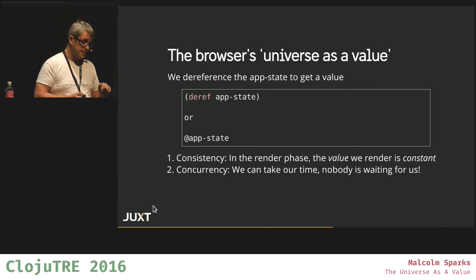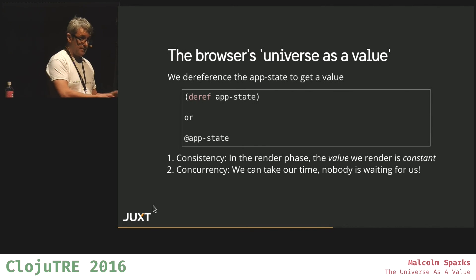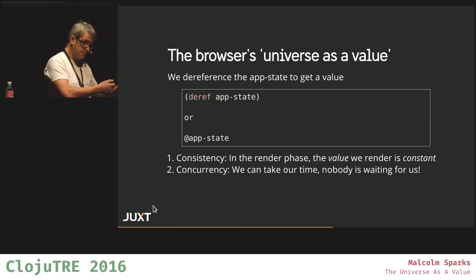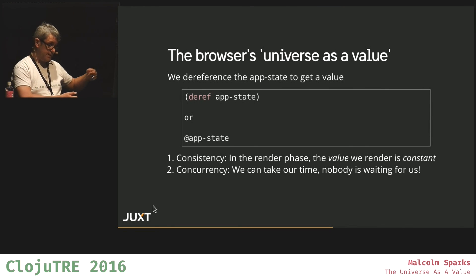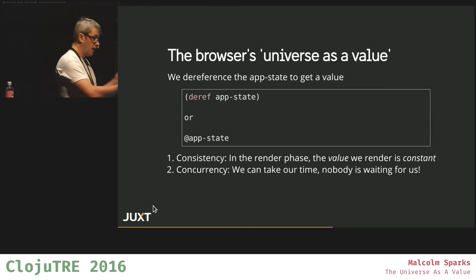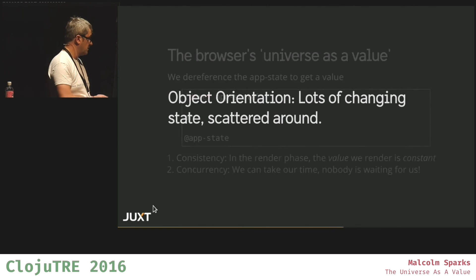Another useful property is concurrency. It doesn't matter how long it takes to render this value, because nobody's waiting for us. The atom can be moving, the atom can be taking on new values. We've not acquired a lock, we're not slowing down anything. We're just taking our time. And we've got concurrency.